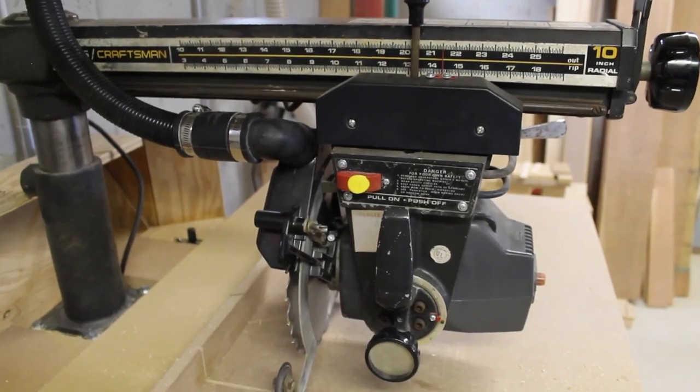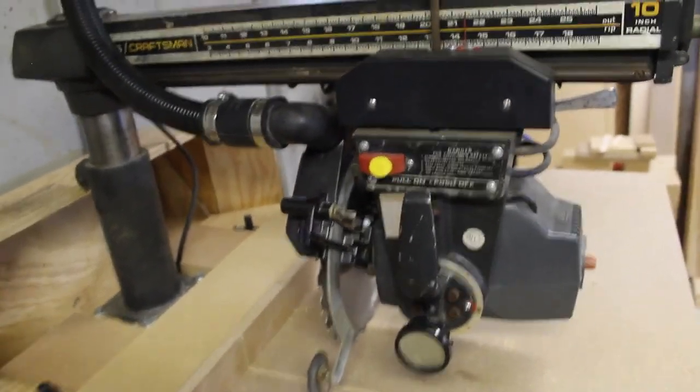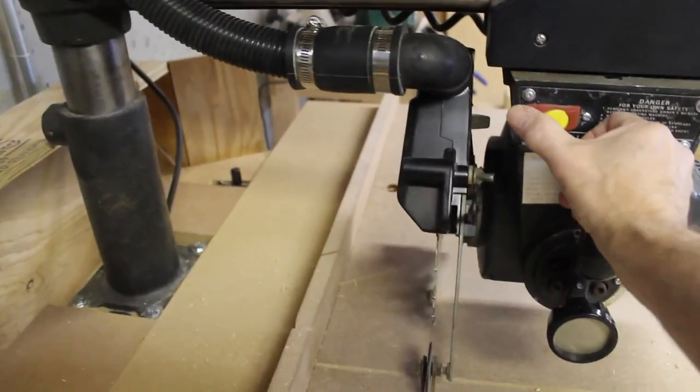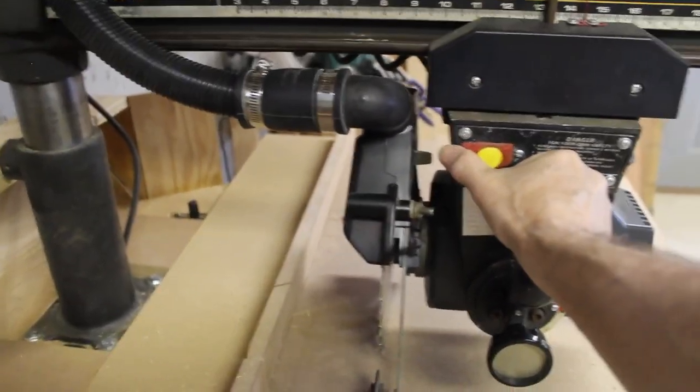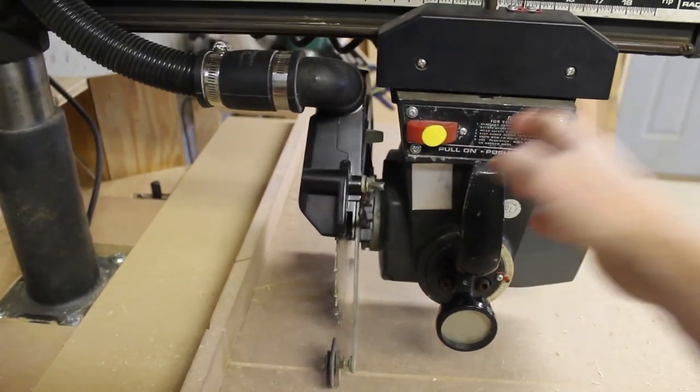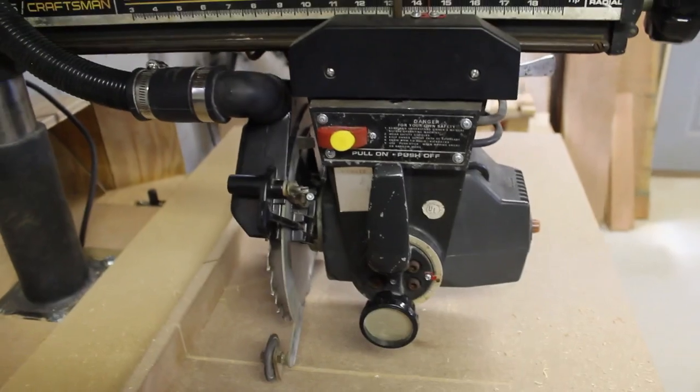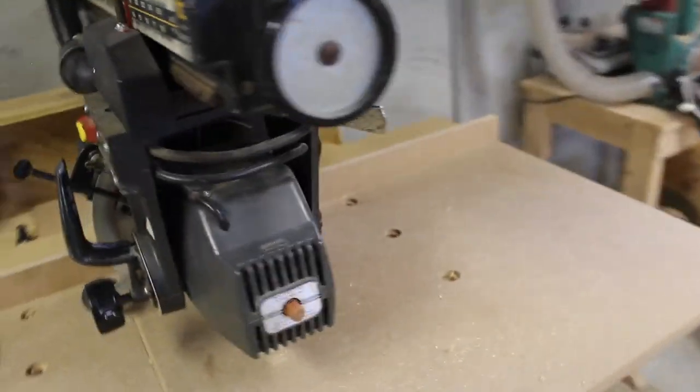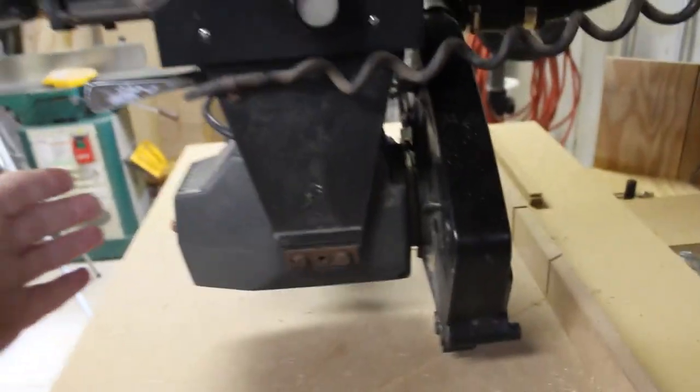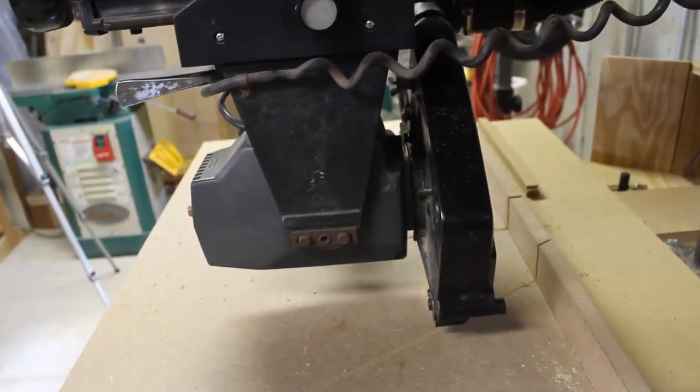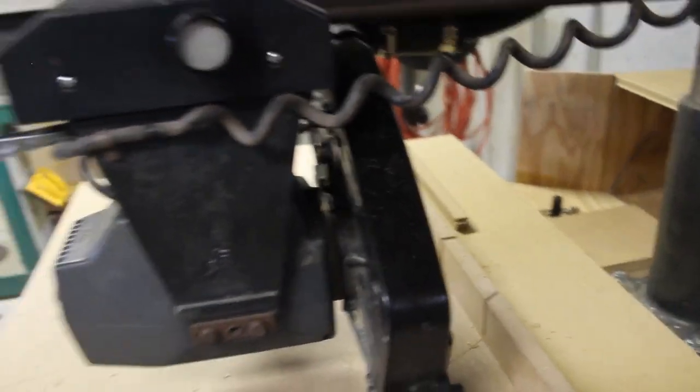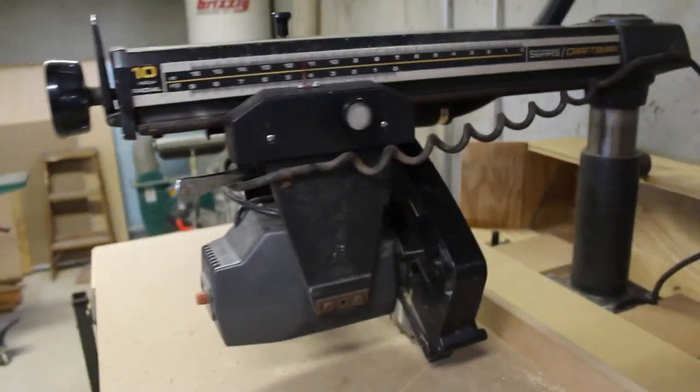On this saw, the switch is in perfect position for crosscutting because I can flip it on and off with one flick of the thumb. But when ripping, the switch is on the opposite side of the head. So if there's a problem, I have to reach all the way around the saw to cut it off.